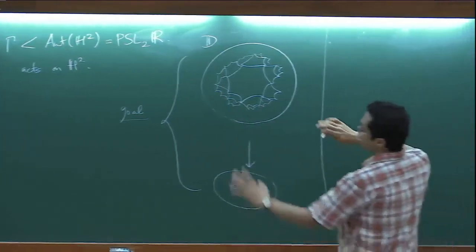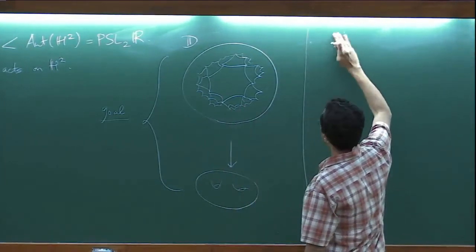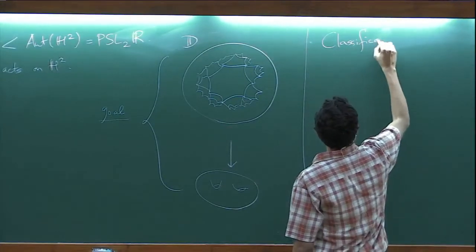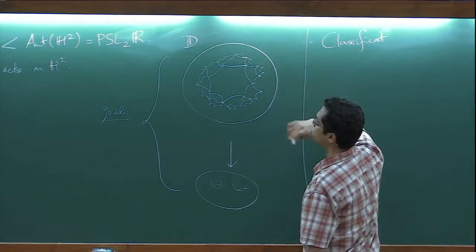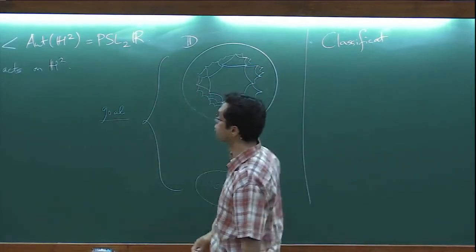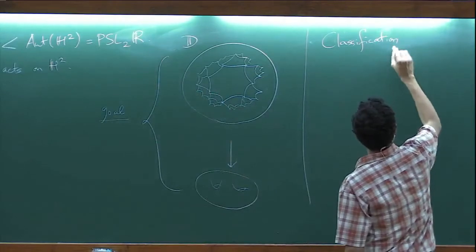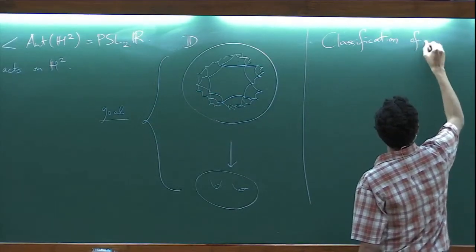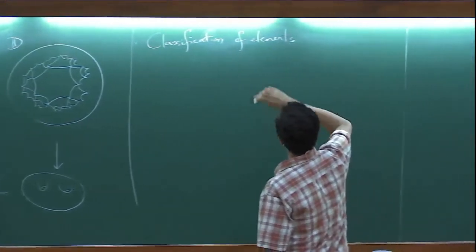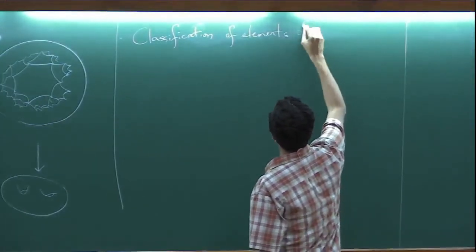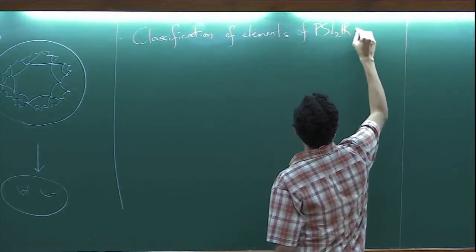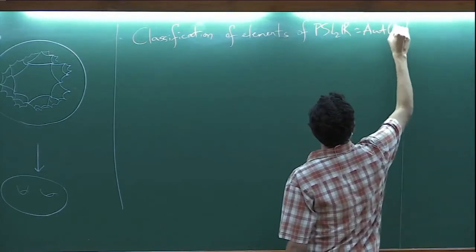Before defining a Fuchsian group, let me tell you more about automorphisms of H², these PSL(2,R) elements. Remember these are linear fractional transformations. This has a classification — the classification of elements of PSL(2,R) into types, which is going to be useful.